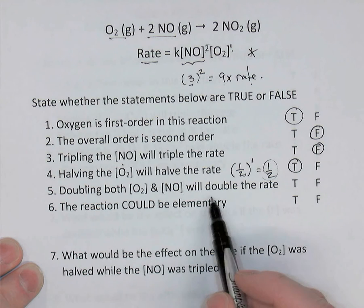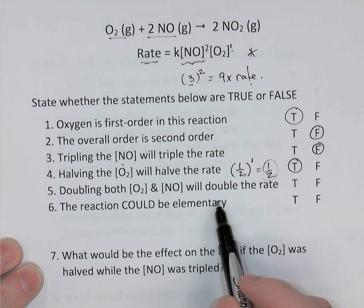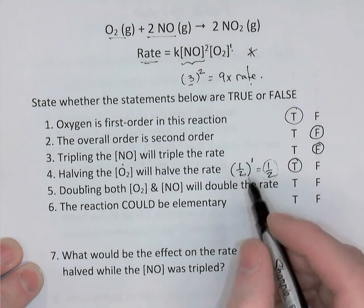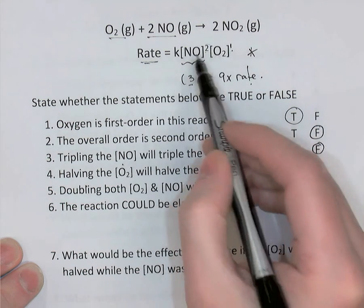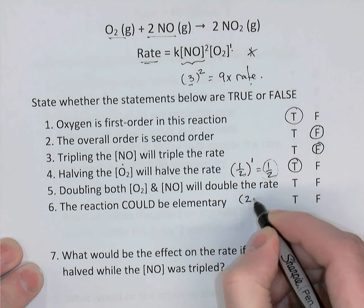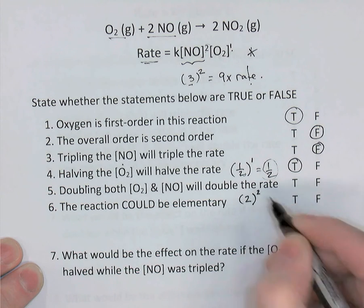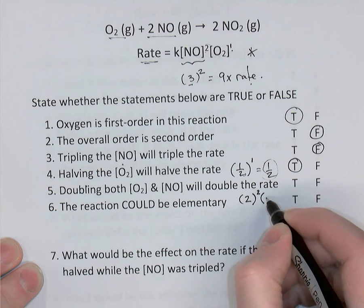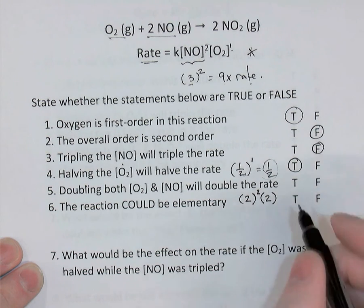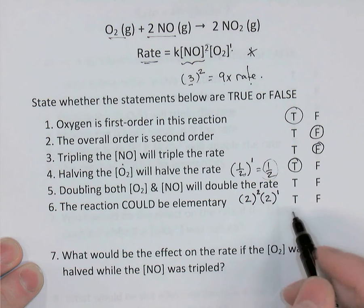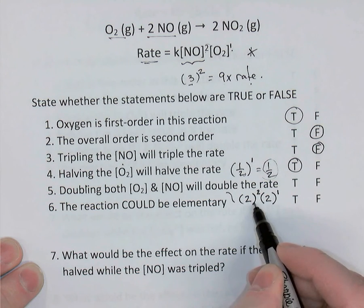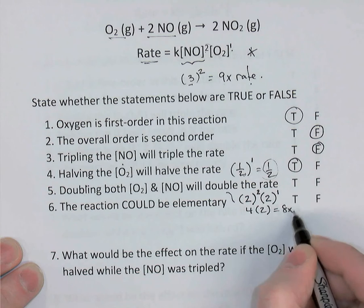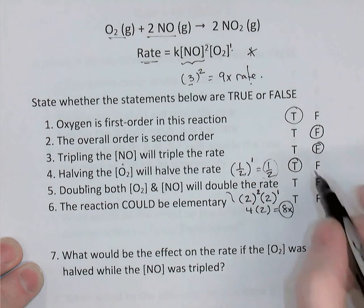If you double both the oxygen and the nitrogen monoxide concentrations, the statement says the rate would double — true or false? Doubling NO, which is second order, raises 2 to the power of 2, giving 4 times the rate by itself. We're also doubling oxygen, which is first order, raised to the power of 1. So the overall effect is 4 times 2 — 8 times the original rate. False.